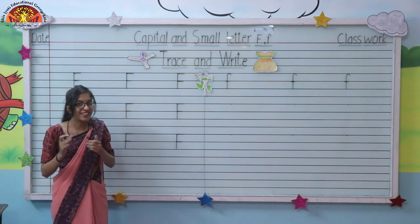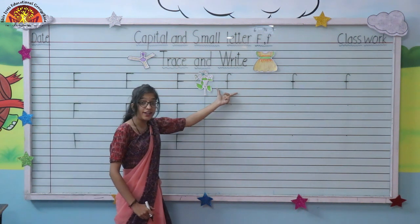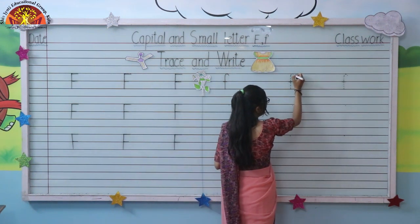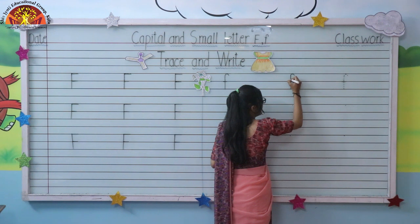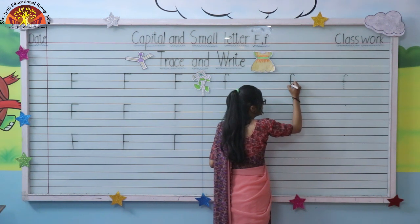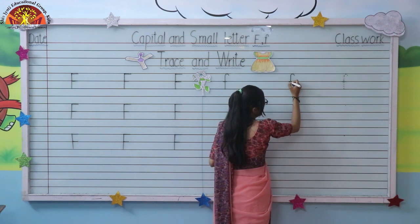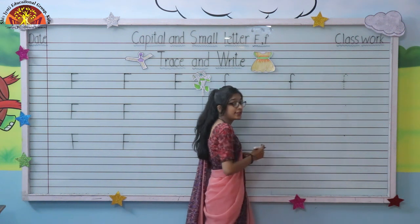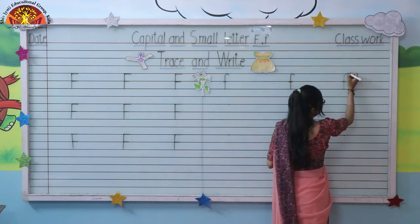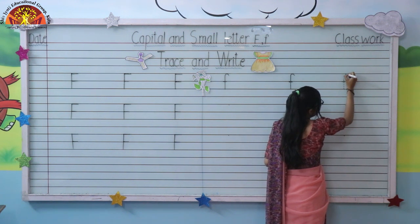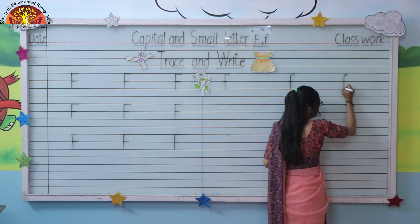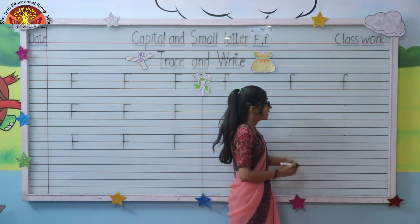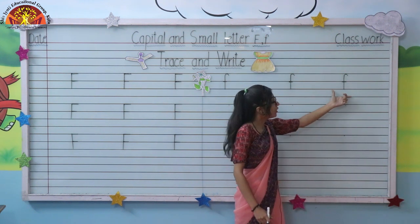Now we will write small letter F. Look here everyone — start from here: curve, touch first line, standing line, touch second line and third line. Now draw one sleeping line. One more time: curve, touch first line, standing line, touch these lines properly, draw one small sleeping line on the second line. This is small letter F.